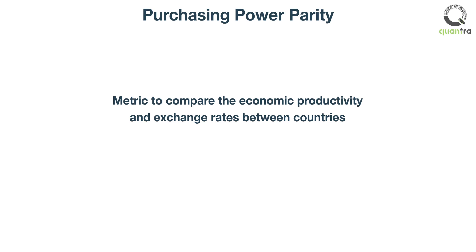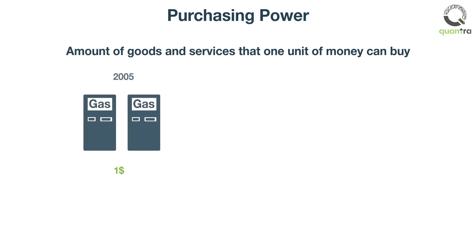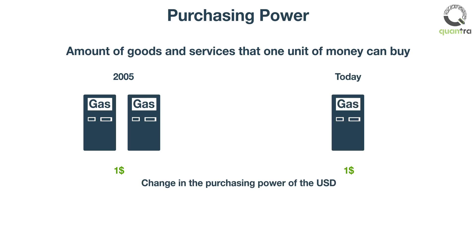Before understanding purchasing power parity, the question that might come to your mind is: what is purchasing power? Purchasing power, also known as buying capacity, is the amount of goods and services that one unit of money can buy. For example, if $1 in the U.S. bought 2 gallons of gas in 2005, and now $1 buys only 1 gallon, then this is the change in the purchasing power of the USD.